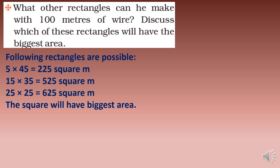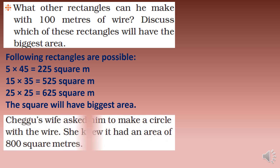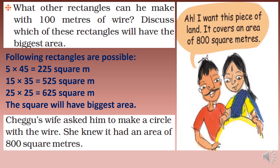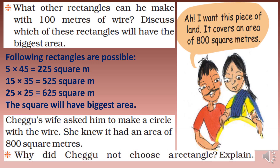What other rectangles can Chegu make with 100 meters of wire? The following rectangles are possible: 5 by 45, 15 by 35, 25 by 25, and so on. Then Chegu's wife asked him to make a circle with the wire — she knew it had an area of 800 square meters. Chegu chose the circle because a circle gives more land — 800 square meters — compared to any rectangle.